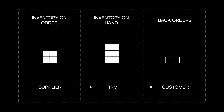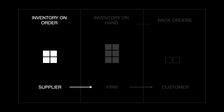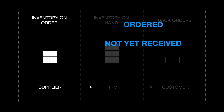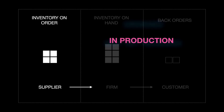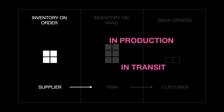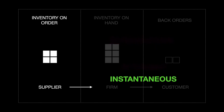It consists of inventory on hand, the inventory on order, and the back orders. Inventory on order is stock ordered from the supplier but not yet received. This inventory is either in production or in transit — stock that would have been on hand if production and transportation lead times were instantaneous.